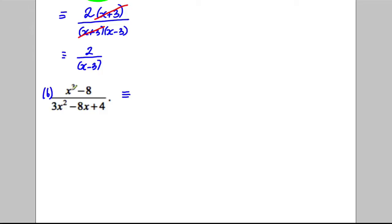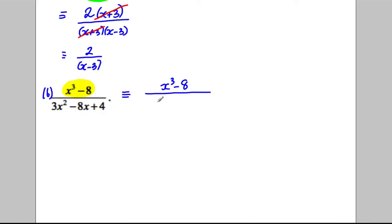I don't immediately see how the numerator factorizes, so I'll come back to that and get an easy mark by factorizing the denominator first. I'm going to write this as (x³ - 8) divided by the factorized denominator. To get 3x² it must be 3x and x; to multiply to positive 4 and get -8x, that's going to be -2 and -2, giving (3x - 2)(x - 2).